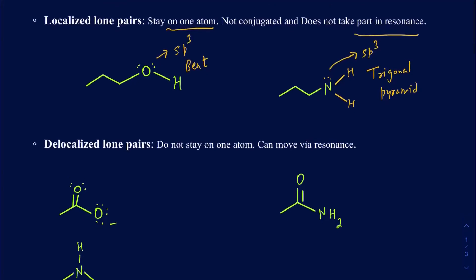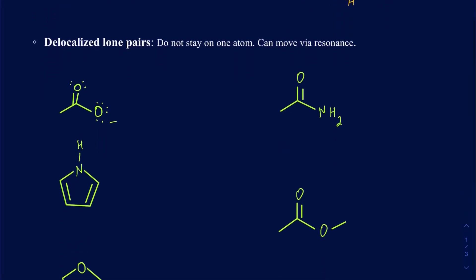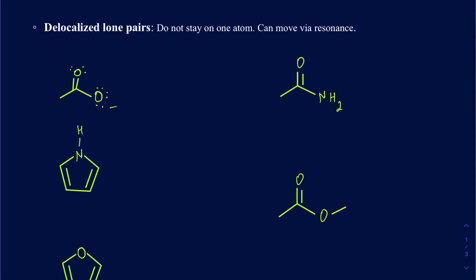Now, let's talk about delocalized lone pairs. As the name specifies, they're not going to be staying on one element or one atom in the structure. But rather, they're going to be moving through resonance. And one of the ways you can identify delocalized lone pairs is that they are going to be your allylic lone pairs.